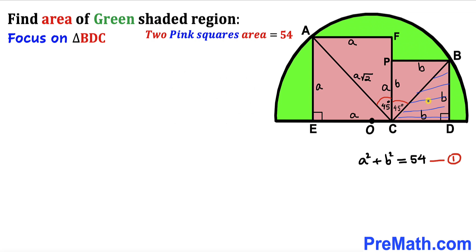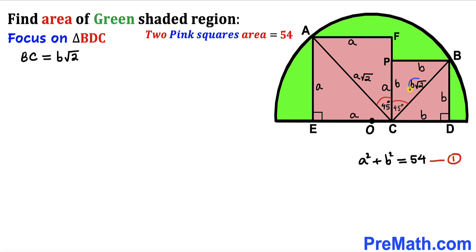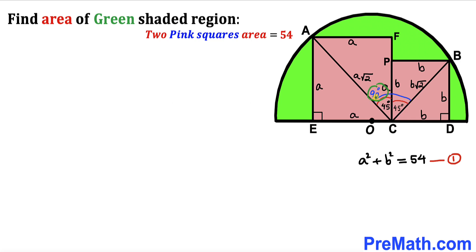Likewise, focusing on the right triangle BDC with side lengths b and b, applying the Pythagorean theorem gives us BC = b√2. Now the whole angle ACB equals 45° + 45° = 90°. Since this angle subtends the arc AB and measures 90 degrees, that arc measurement is 90 degrees as well.